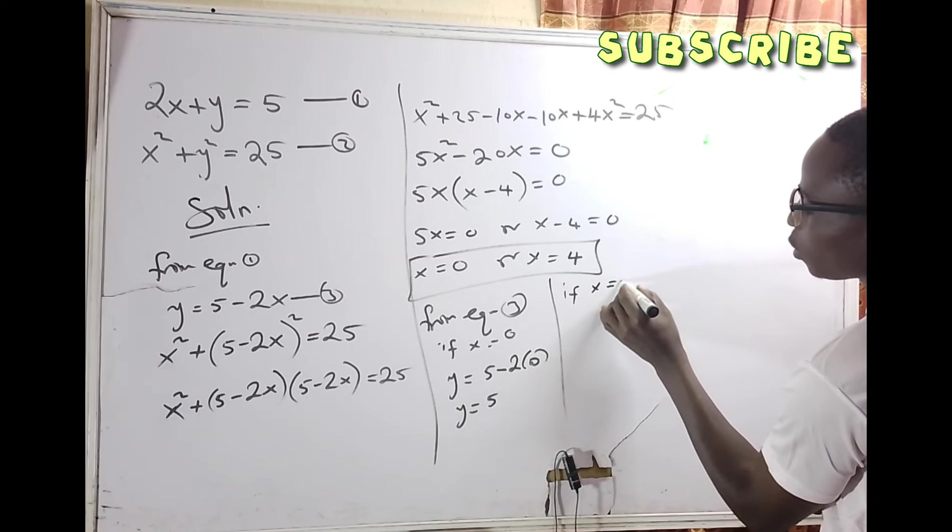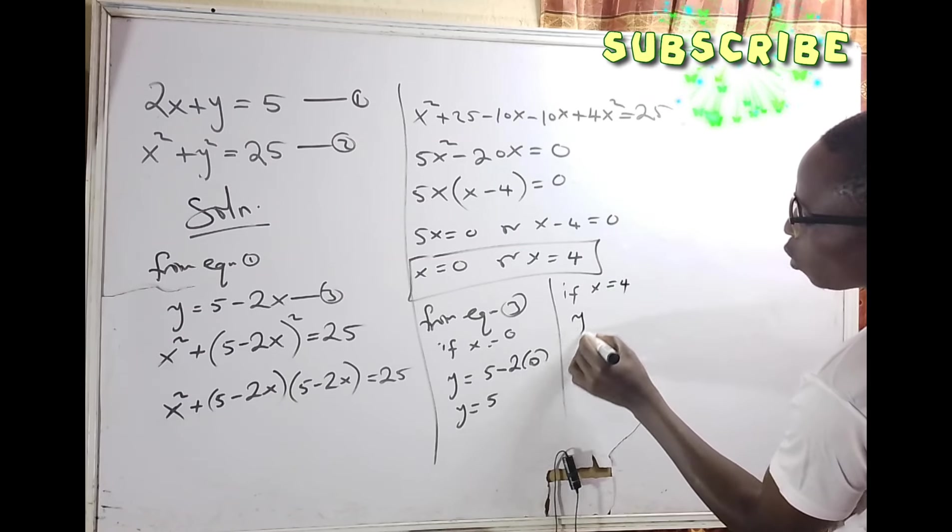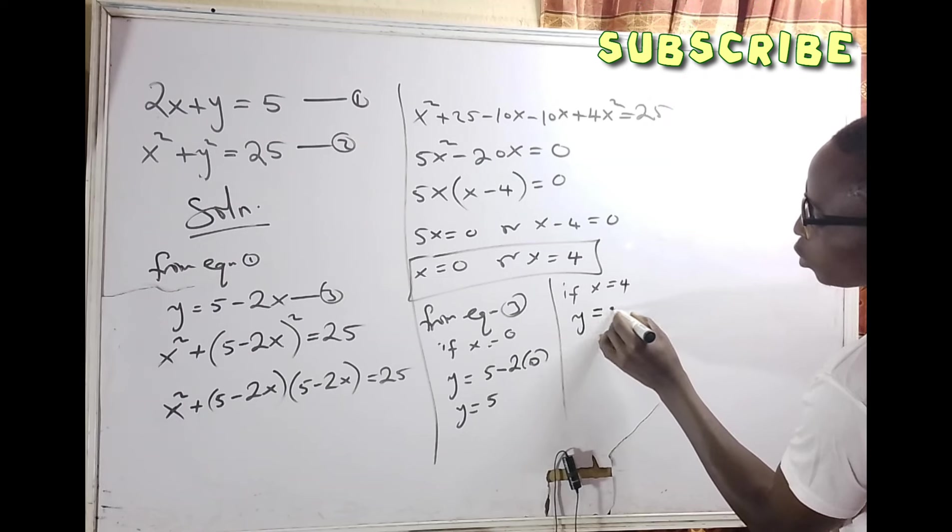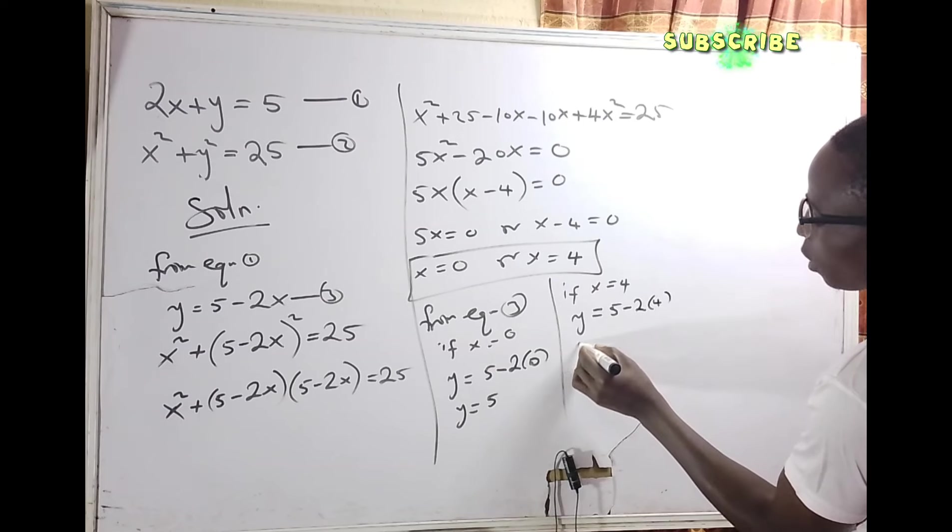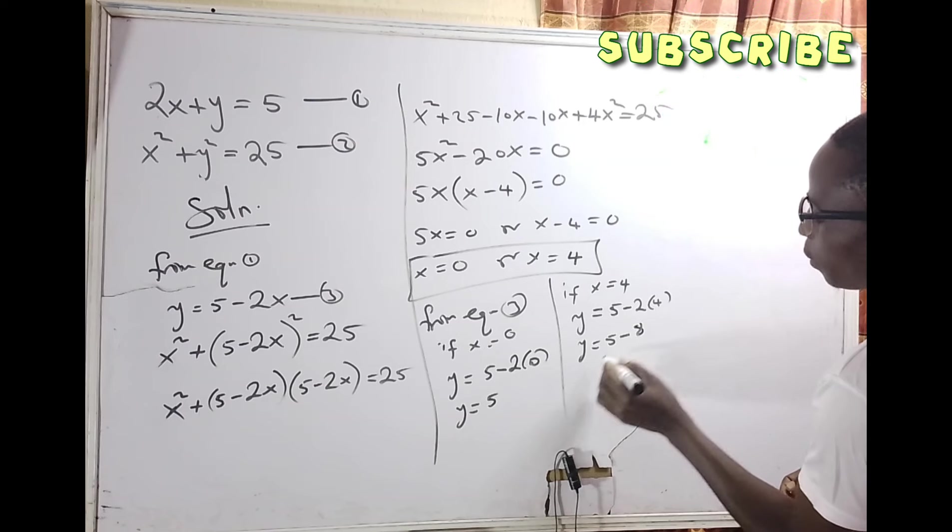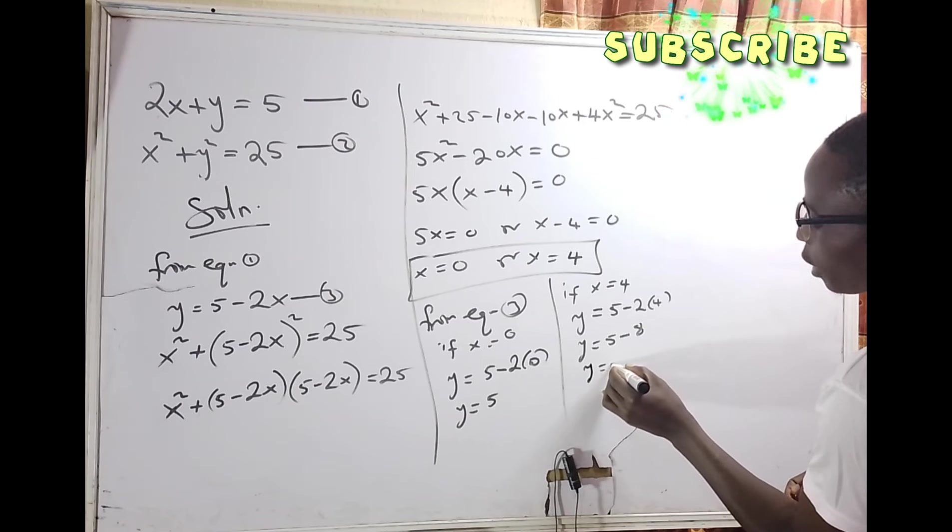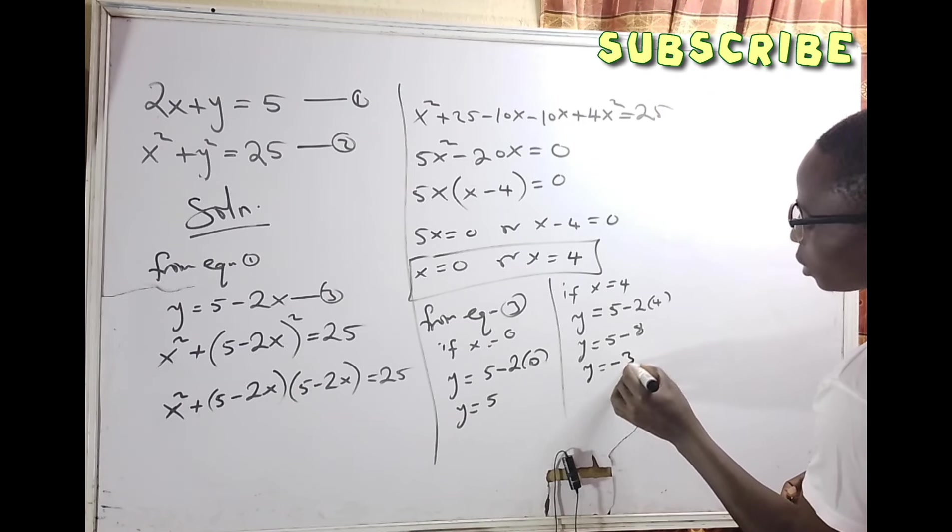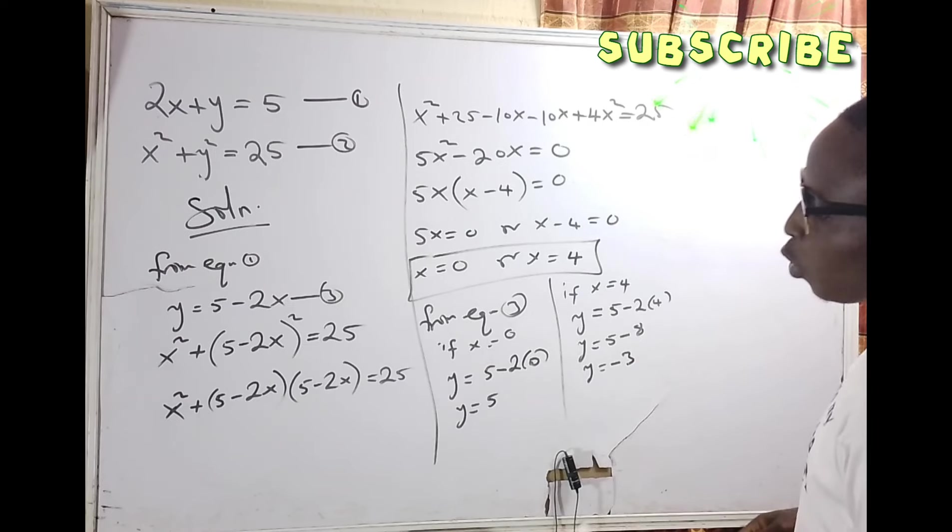If x equals 4, then y equals 5 minus 2 times 4. That means y equals 5 minus 8, which equals minus 3. So in conclusion...